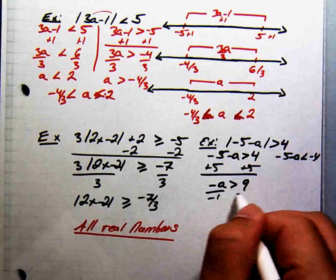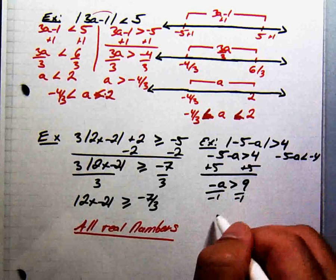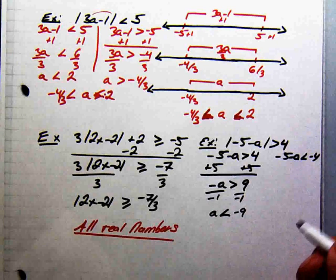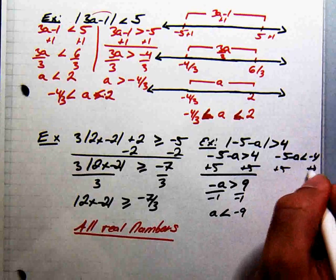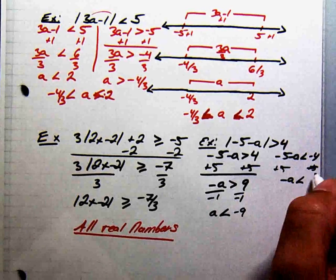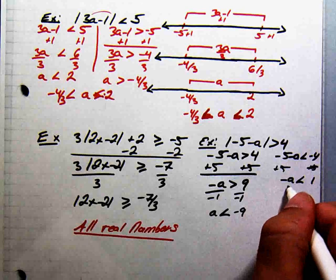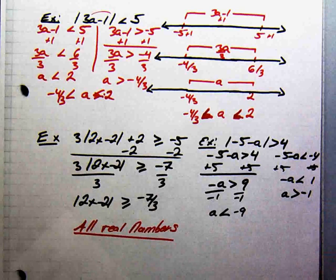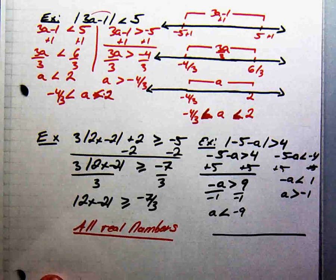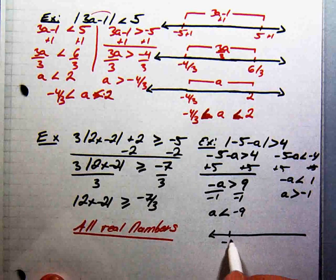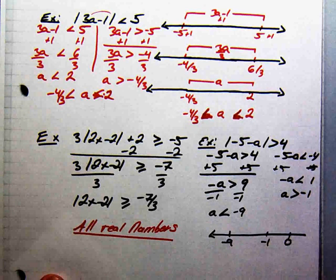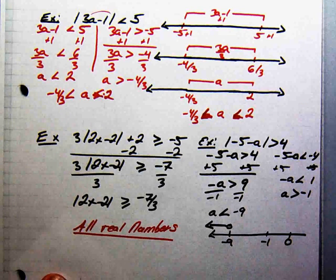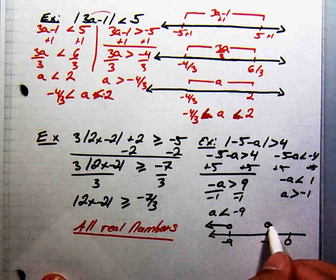Dividing by negative 1 — and remember, when you multiply or divide by a negative, you switch the direction of the inequality symbol — gives a is less than negative 9. For the second inequality, adding 5 gives negative a is less than 1, and dividing by negative 1 gives a is greater than negative 1. On the number line, we have all numbers less than negative 9 going to the left, and all numbers greater than negative 1 going to the right.